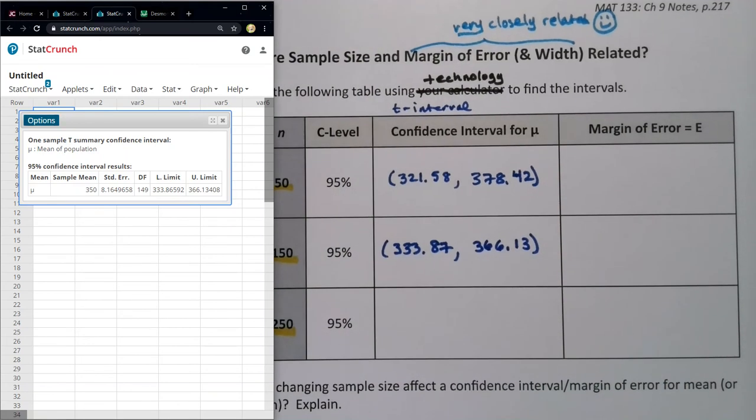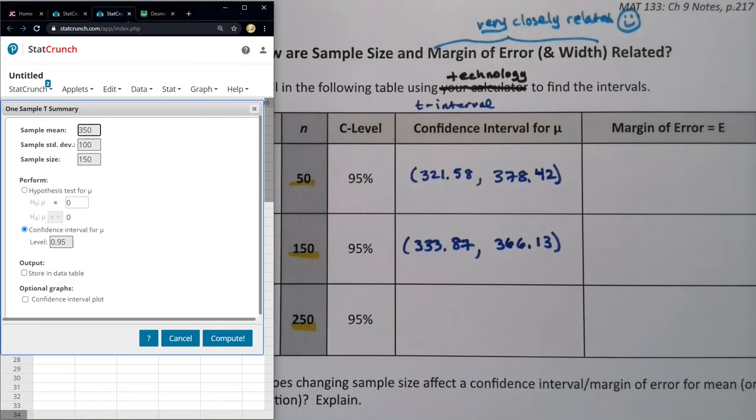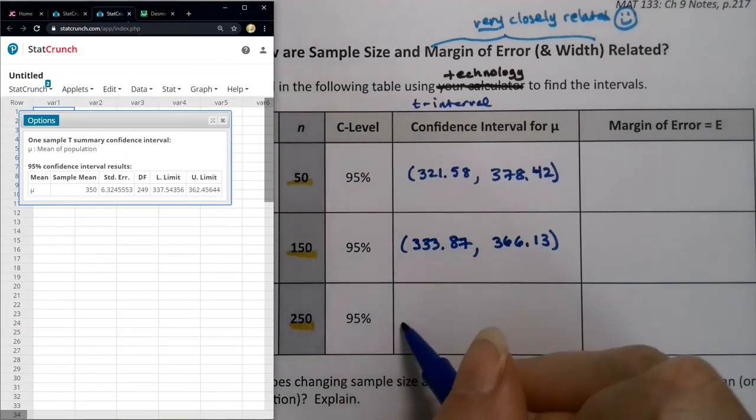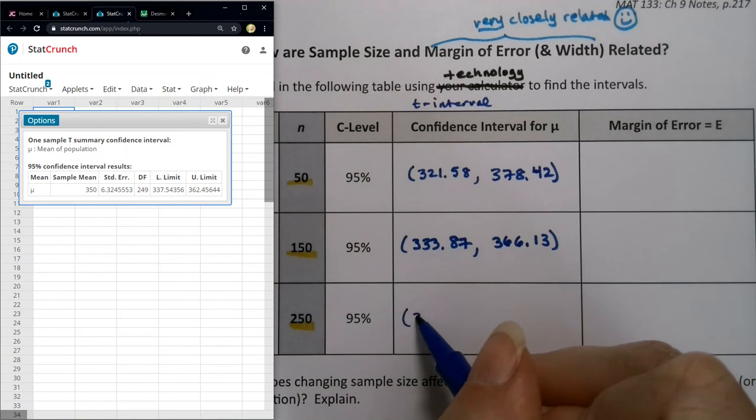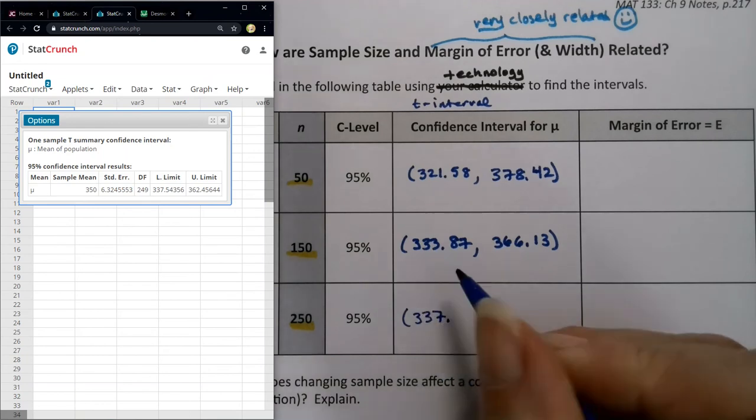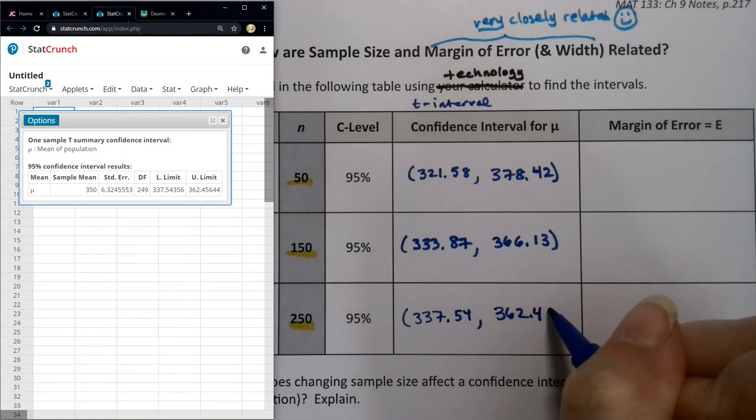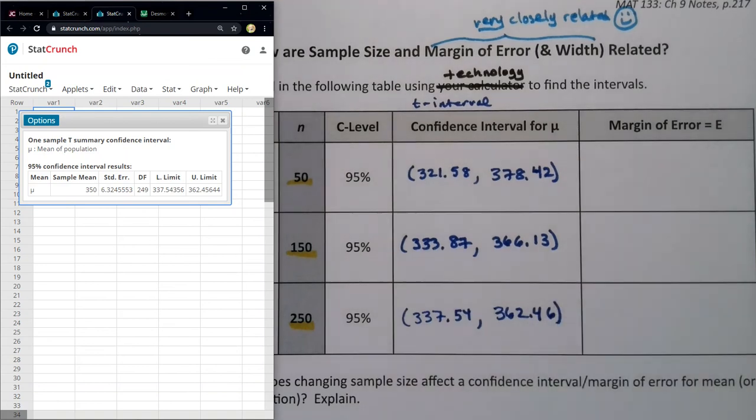Alright, and I'm going to click edit again. So edit. And then it would change for that last part to 250. So my sample size becomes 250. Click compute. And I have 337.54 and then 362.46. If we round. Alright, so there are all those values. Now I need to find the margin of error.